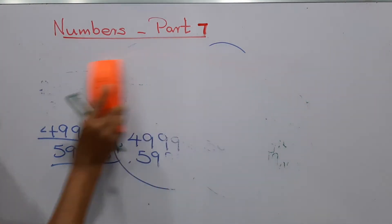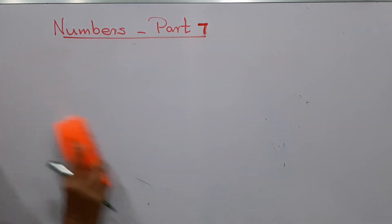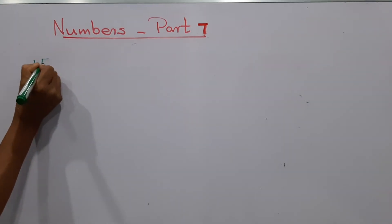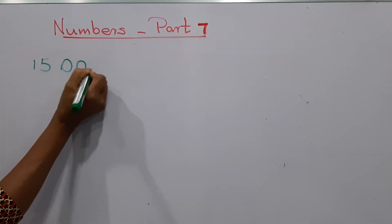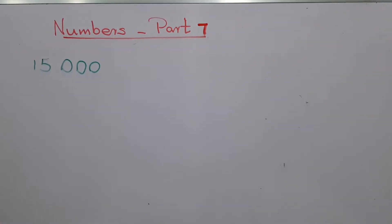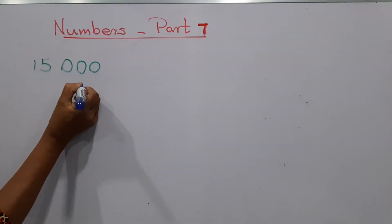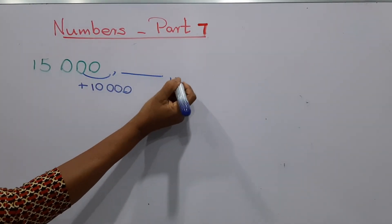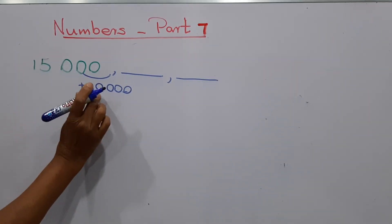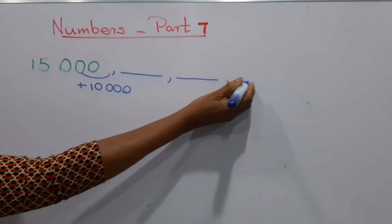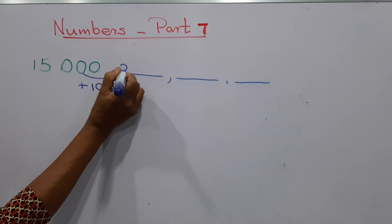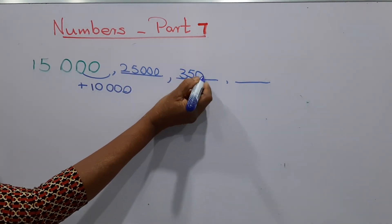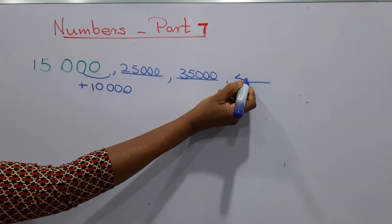We'll start a number pattern — make it as a hobby; you can enjoy starting with a number. The starting number is 15,000, and I will give you the common difference as 10,000. You have to make a pattern adding 10,000 each time. The next number is 25,000, then 35,000, then 45,000.